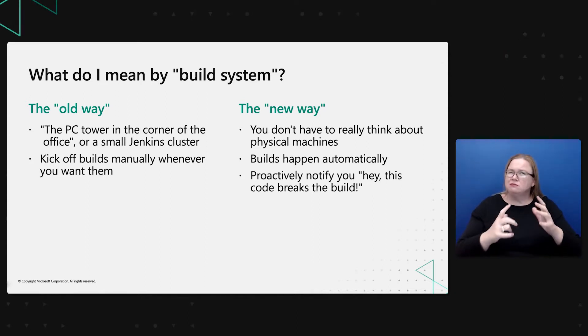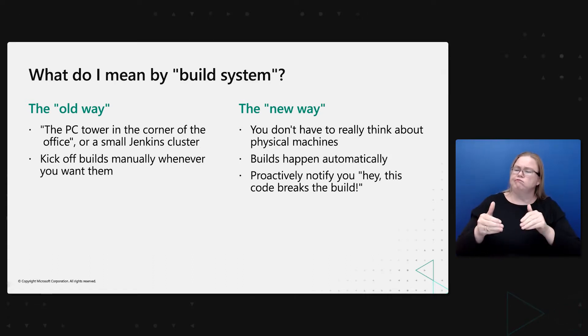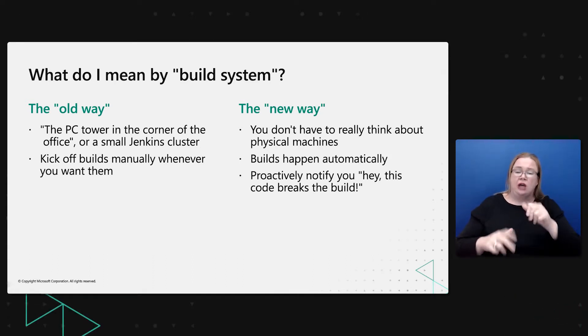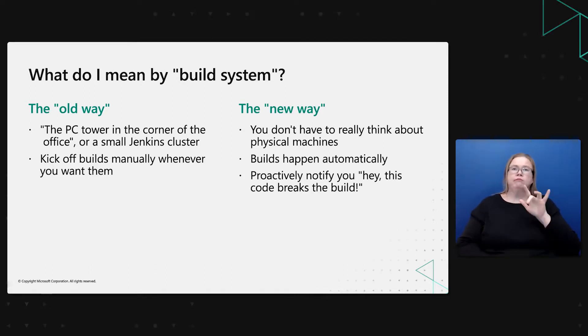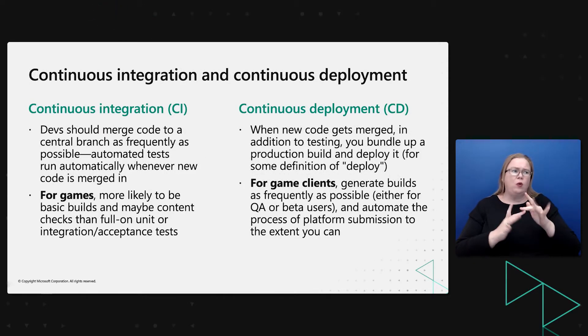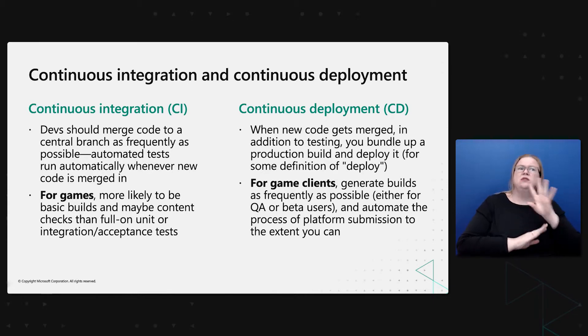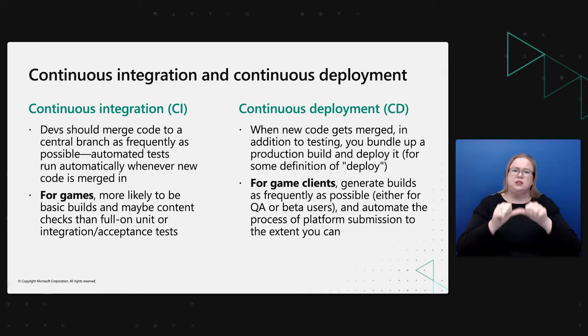There's a larger shift happening where it's much more about proactive builds. You are not maintaining physical hardware. You're not telling a build system 'I want to build now.' Builds just happen automatically and they proactively notify you when you do something like break the build. In enterprise, web, and other types of software development, we talk a lot about continuous integration and continuous deployment — or continuous delivery. Don't get too caught up in all the terminology, but the concepts are important.